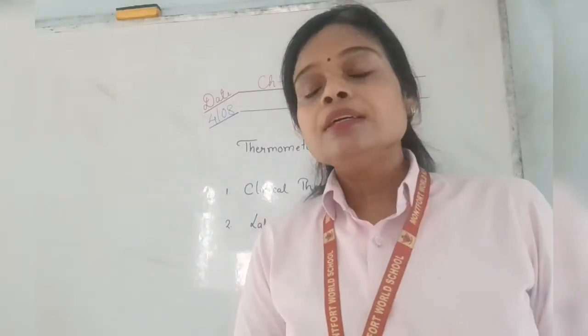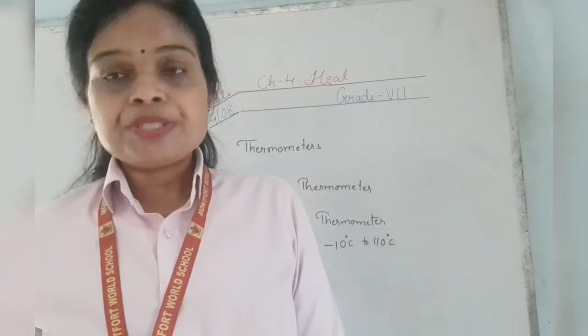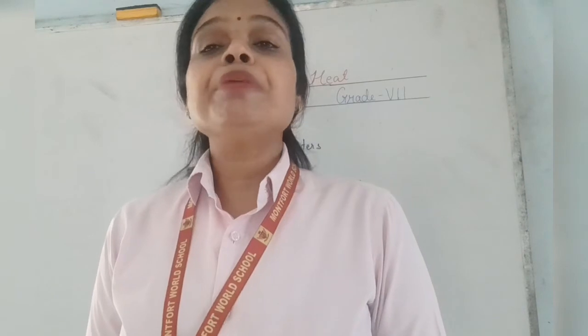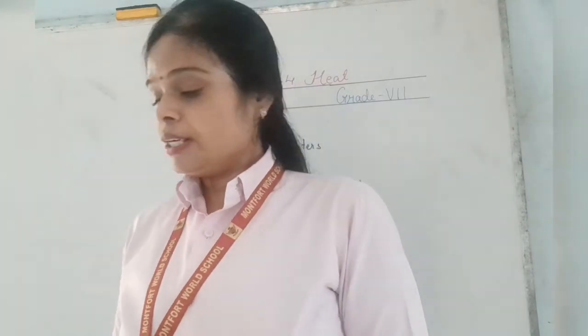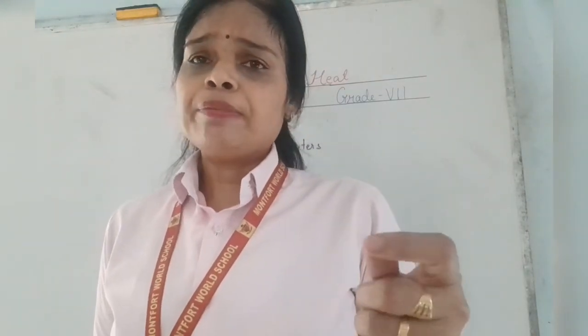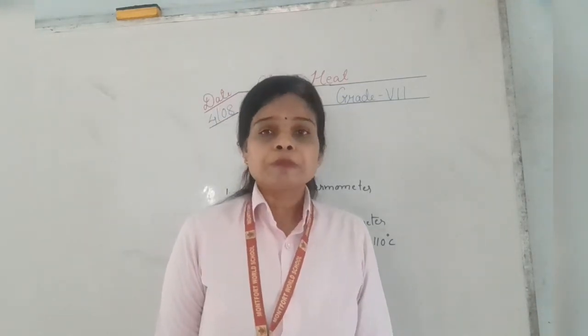To measure the minimum and maximum day temperature, we have a minimum-maximum thermometer. This thermometer shows both the minimum and maximum temperature of the day. The maximum temperature is recorded at afternoon and the minimum temperature at midnight when it is very low. That concludes today's topic. Thank you.